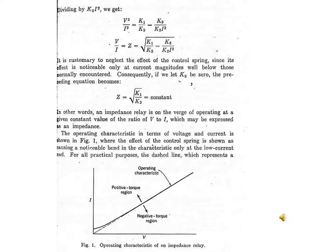From this equation, we can modify. Both sides are divided by k2i². We get v² divided by i² equal to k1 divided by k2 minus k3 divided by k2i².